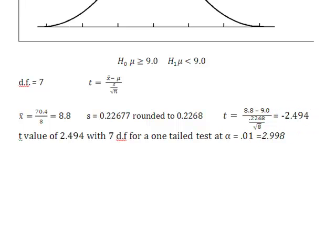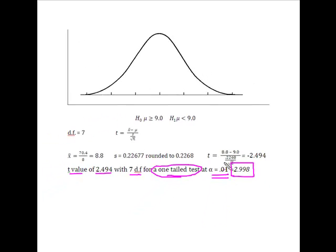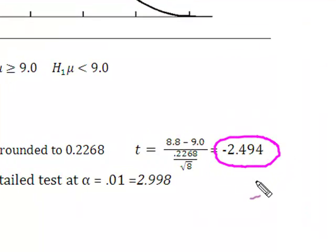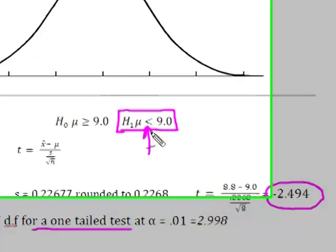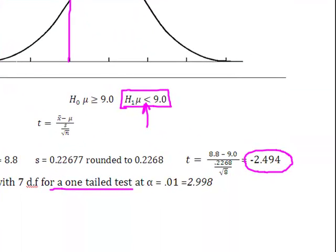So what I've ended up with now are two different values. One is the location of my critical or rejection region based on a T value of 2.494, or actually a T value with 7 degrees of freedom for a one-tailed test and an alpha equal to 0.01. The other value that I have is the value that I calculated, which is this negative 2.494. Because even though this is a one-tailed test, I go back up here, see where my alternative hypothesis is? Look at the direction that that arrow is pointing. I know that I'm dealing with this lower tail of the curve. So, I'm going to test at this one tail on this lower tail of the curve, and I'm now going to make a decision by looking at where these two values fall relative to one another on the curve.